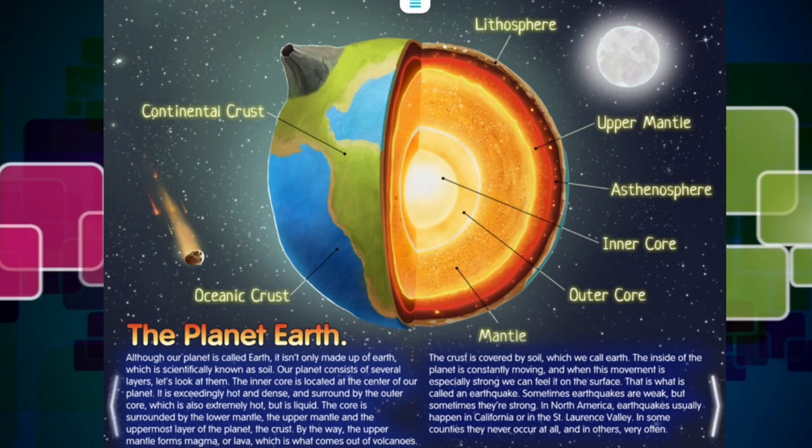The inside of the planet is constantly moving, and when this movement is especially strong, we can feel it on the surface. That is what is called an earthquake. Sometimes earthquakes are weak, but sometimes they're strong. In North America, earthquakes usually happen in California or in the St. Lawrence Valley. In some countries, they never occur at all, and in others, very often.